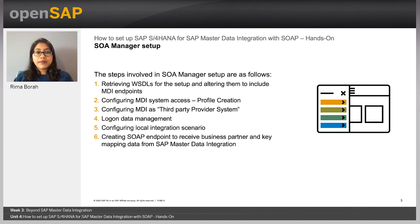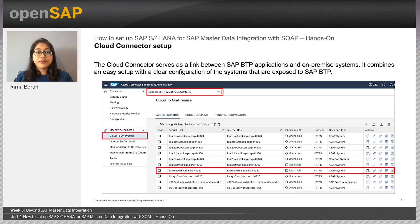Please refer to the link for a step-by-step guide. Next, we come to the cloud connector setup. The cloud connector serves as a link between SAP BTP applications and on-premise systems. It combines an easy setup with a clear configuration of the systems that are exposed to SAP BTP. There are two major steps involved in this setup.